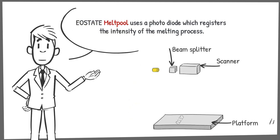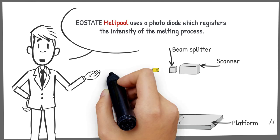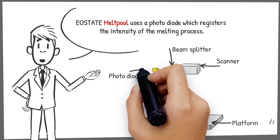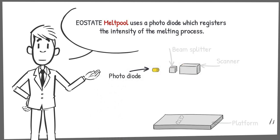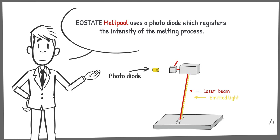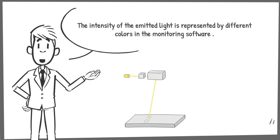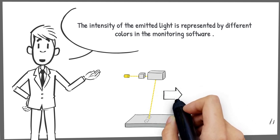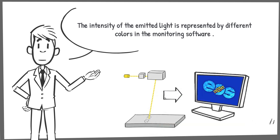e-ESTATE Melt Pool uses a photo diode which registers the intensity of the melting process. The intensity of the emitted light is represented by different colors in the monitoring software.